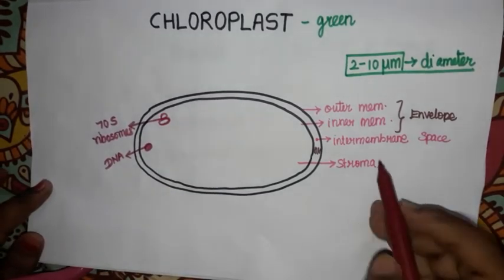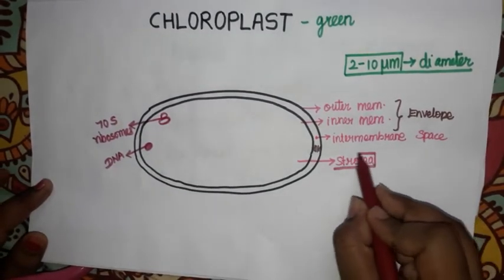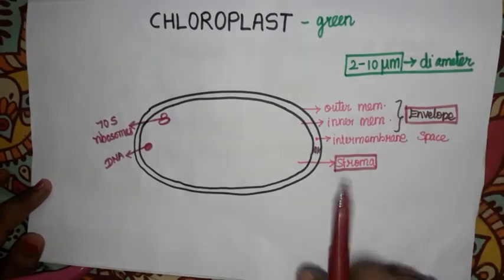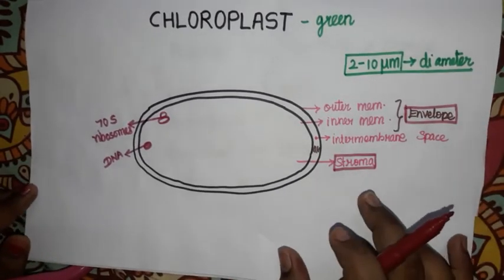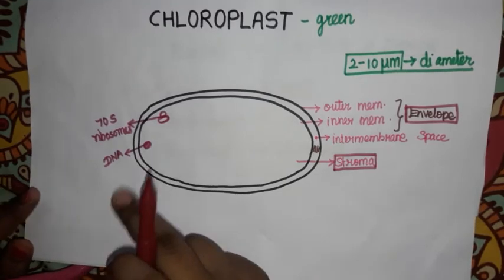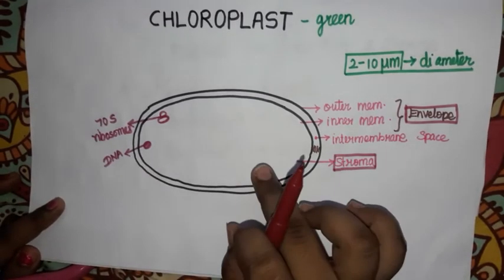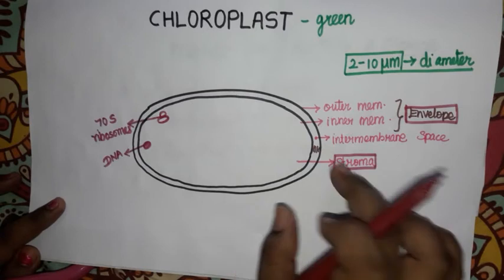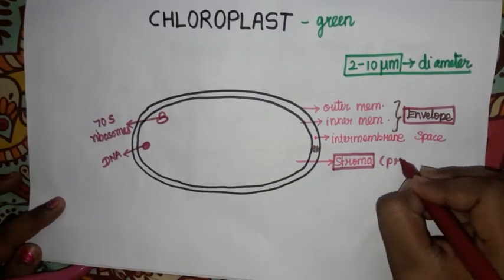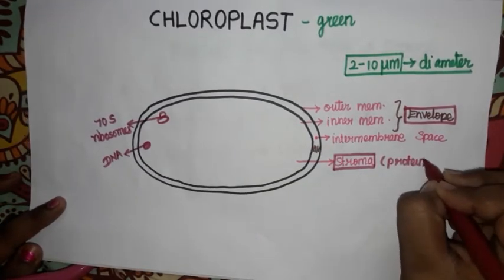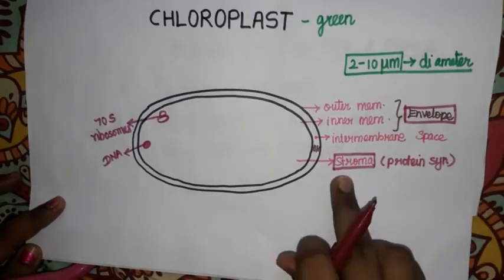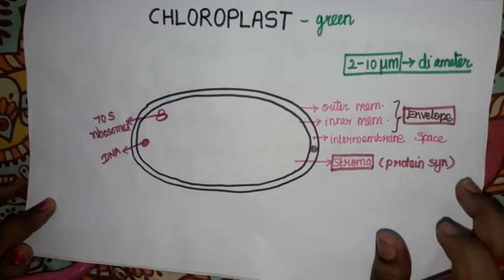The second topic is stroma, the first being the envelope. The stroma contains DNA and 70S ribosomes. All structures inside the stroma help for protein synthesis.